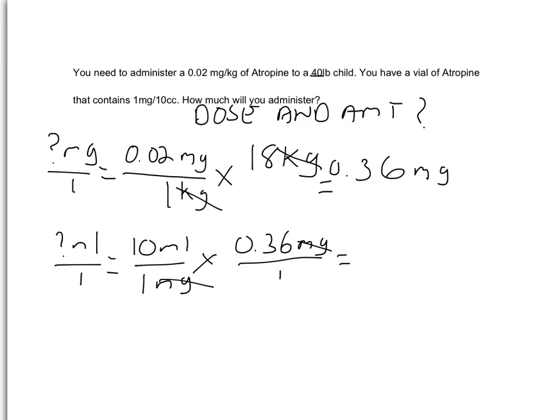So now, 10 times 0.36, we're just going to shift the decimal point over 1, and we're going to get 3.6 milliliters.